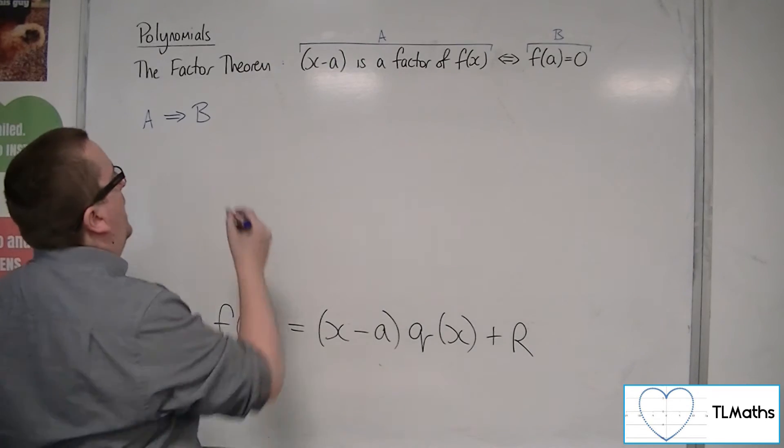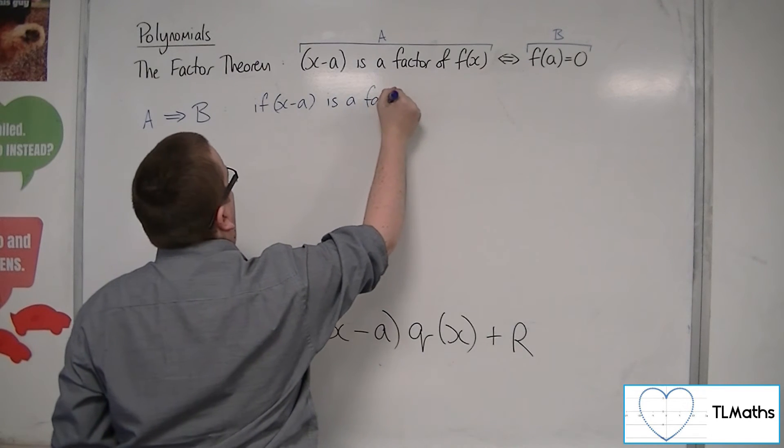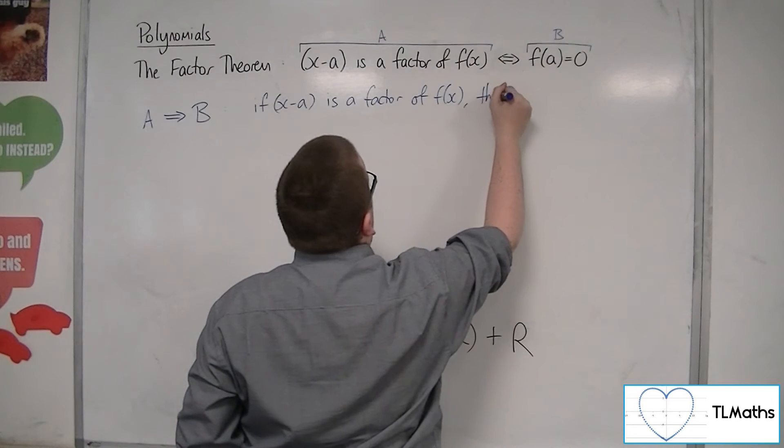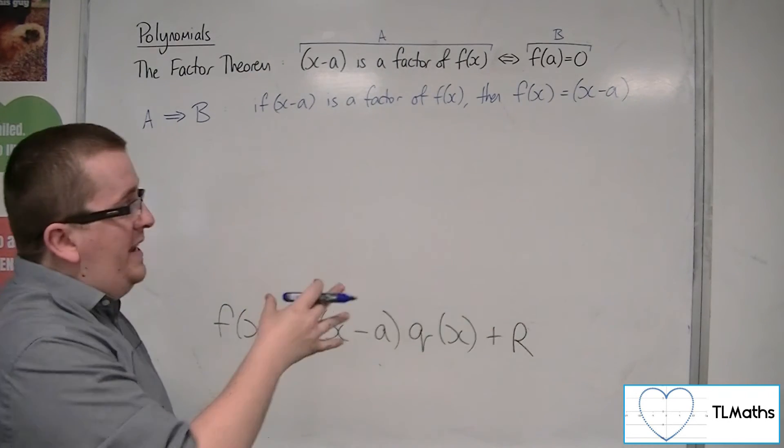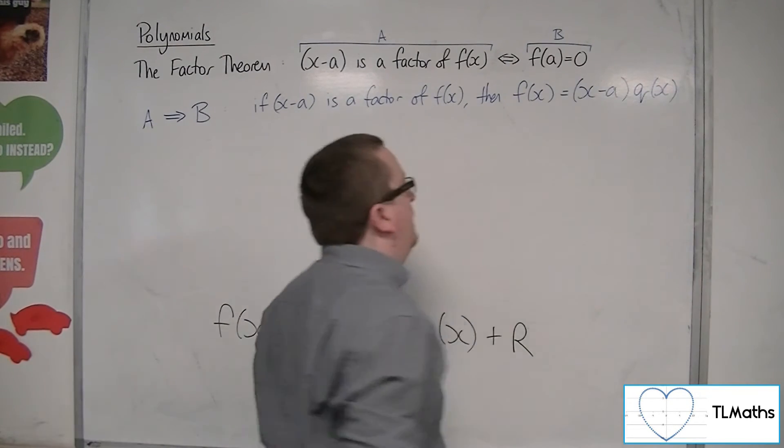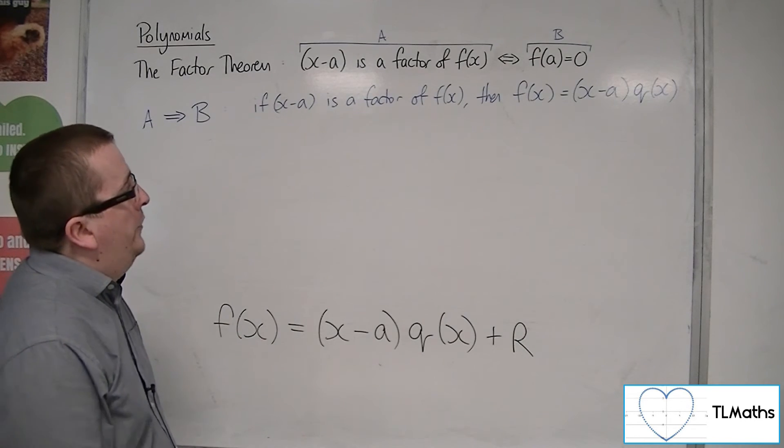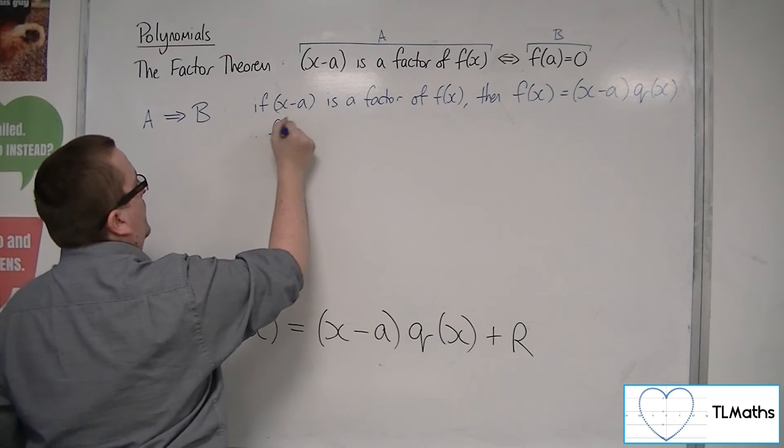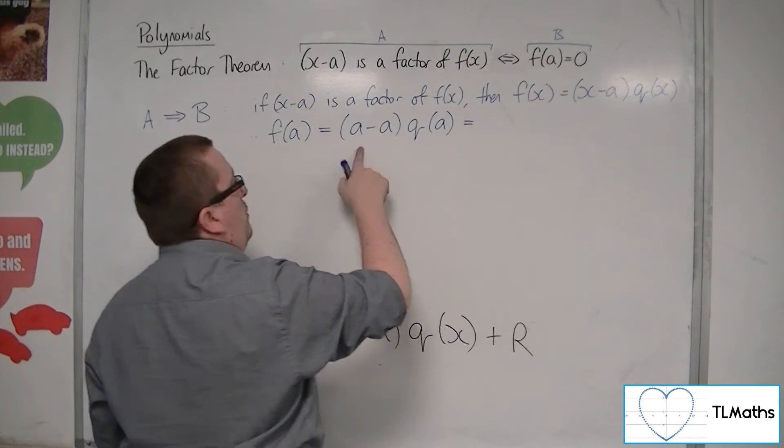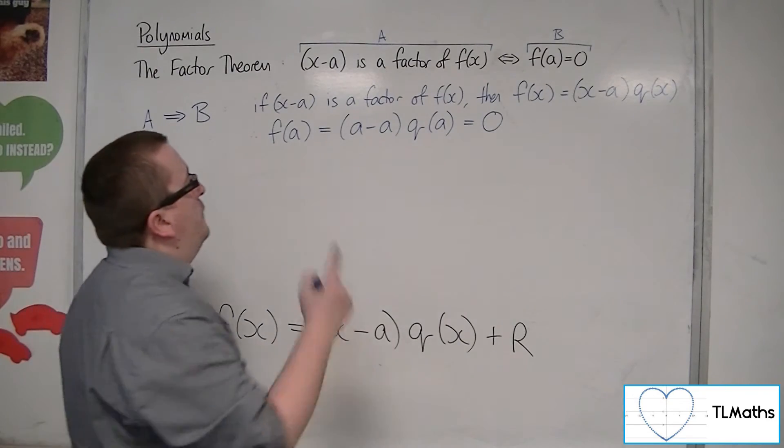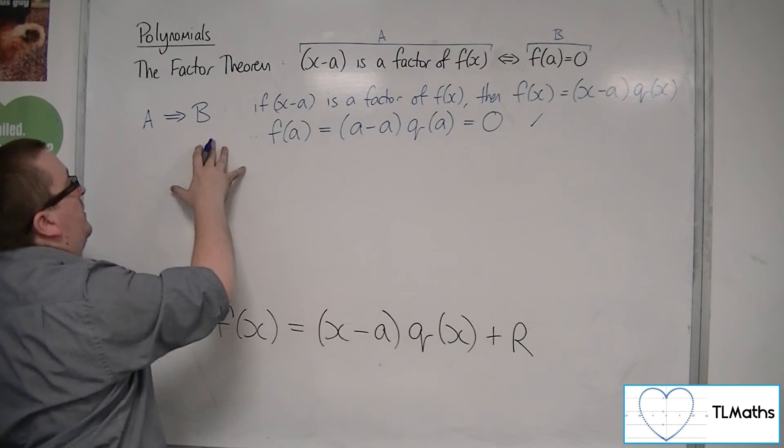So if x minus a is a factor of f of x, then by definition f of x can be written as the linear factor x minus a times some function of x, some other function of x. Notice how the r's not there, because I would be saying that there is no remainder. So if I'm now looking at f of a, then I have a minus a times q of a. a minus a is just 0, so 0 times whatever that is will just be 0. And so I've shown that f of a must be 0 based on that initial statement. So a implies b, and that's true.